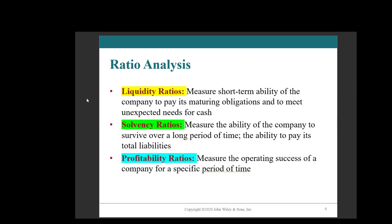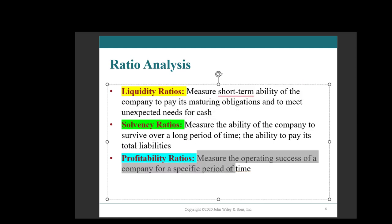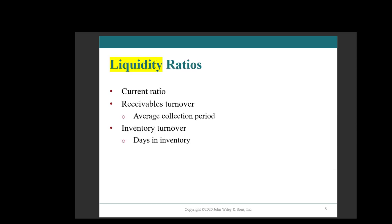When looking at ratio analysis, we have three main types. Liquidity asks: in the short term, are you going to be able to pay your obligations? Do you have cash on hand? In the next video we'll be looking at solvency — over a longer period of time, do you have enough to pay your total liabilities? Are you solvent in the long run? And then profitability: you may be liquid, you may be solvent, but are you making money? In this chapter we'll look at liquidity ratios — specifically the current ratio, receivables turnover, and inventory turnover.